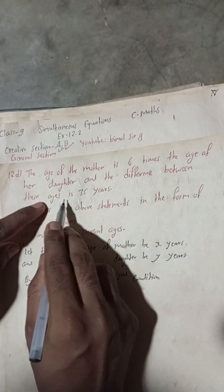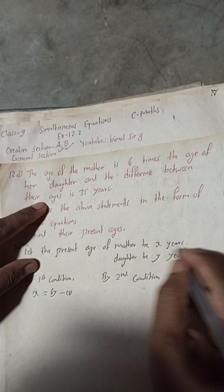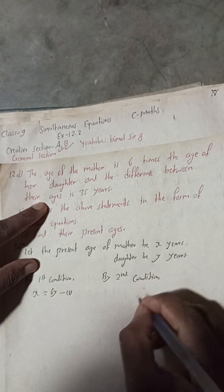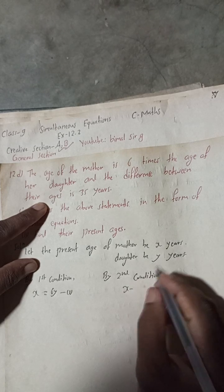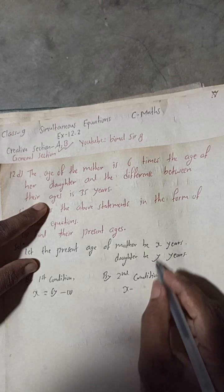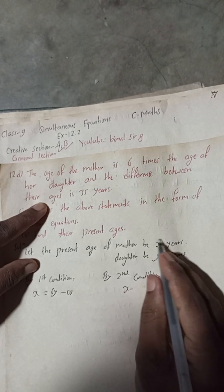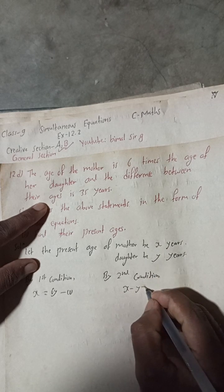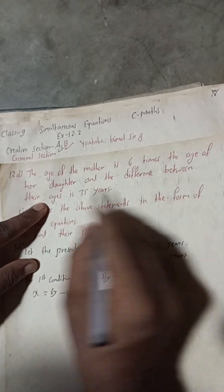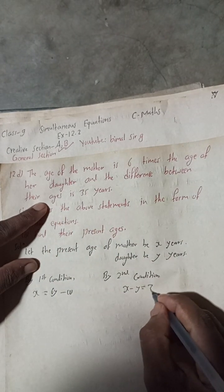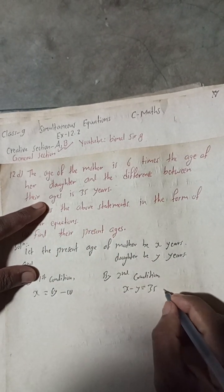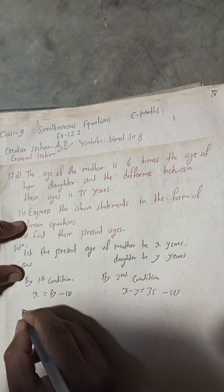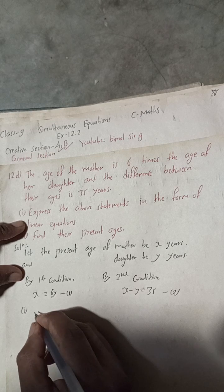By the second condition, the difference between their ages: mother's age is greater, daughter's age is smaller, so it is x minus y. The difference between their ages is 35 years, so x − y = 35. This is our Equation 2. Both together are the system of equations.